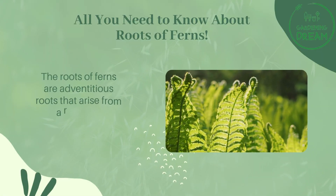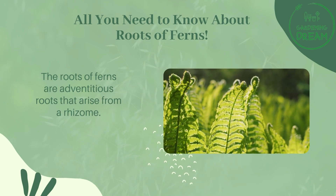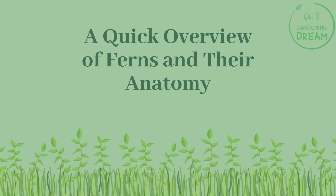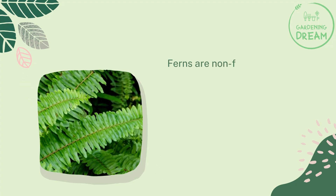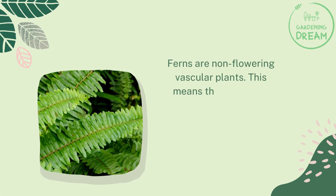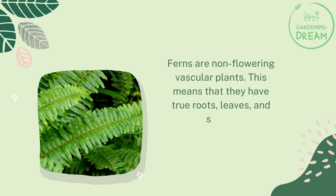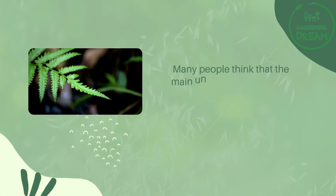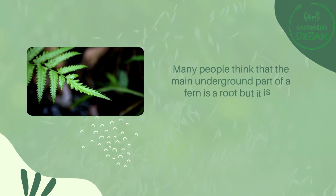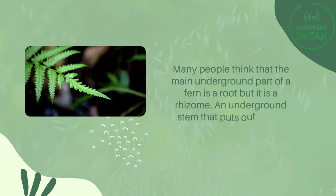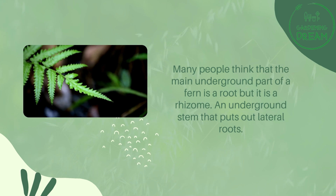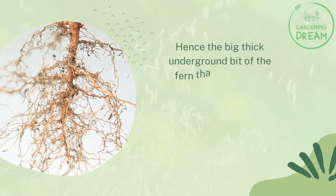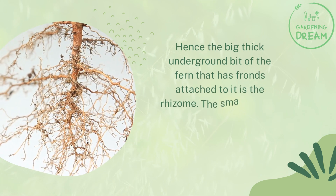A quick overview of ferns and their anatomy. Ferns are non-flowering vascular plants, meaning they have true roots, leaves, and stems. Many people think the main underground part of a fern is a root, but it is actually a rhizome — an underground stem that puts out lateral roots. The big thick underground portion with fronds attached is the rhizome.